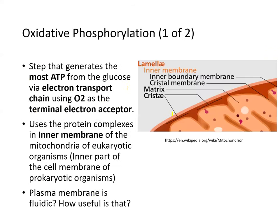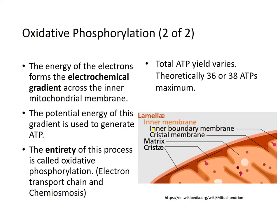The step that generates the most ATP is oxidative phosphorylation. It uses the electron transport chain and O2 as the terminal electron receptor — this is why we breathe in O2. It uses protein complexes in the inner membrane of the mitochondria. The plasma membrane being fluid is very beneficial because all of these electron transport chain molecules must float and collide with each other — that's what carries out the transfer of electrons.